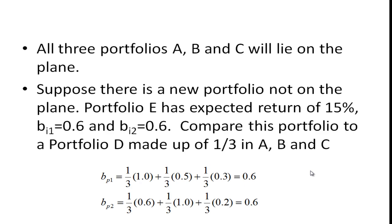All three of these portfolios A, B, and C will lie on a plane. Now here's where the arbitrage pricing comes in. Suppose there's a new portfolio not on the plane. Portfolio E, for example, has an expected return of 15%, and we're going to assume that bi1 = 0.6 and bi2 = 0.6. Well, what we can do is create a portfolio D that's made up of A, B, and C with one-third in each one of these portfolios.